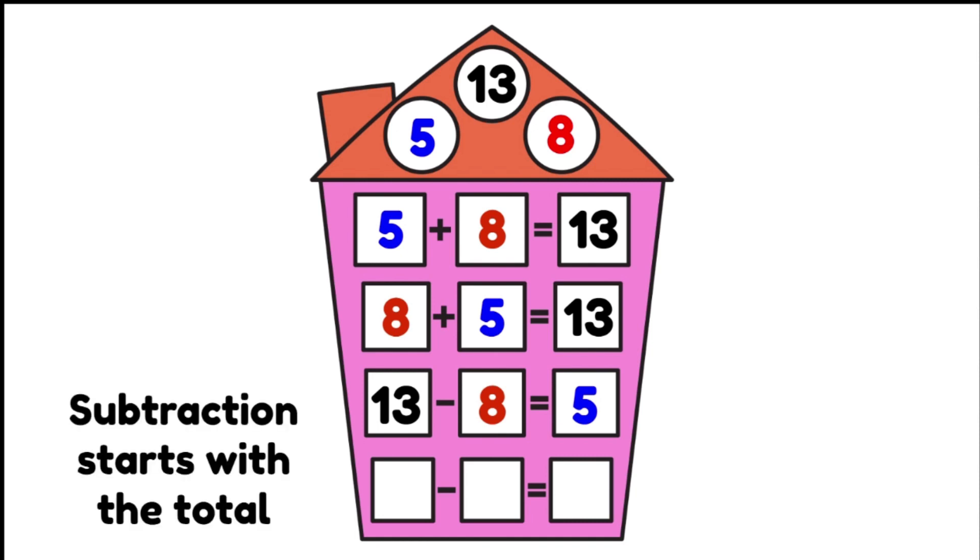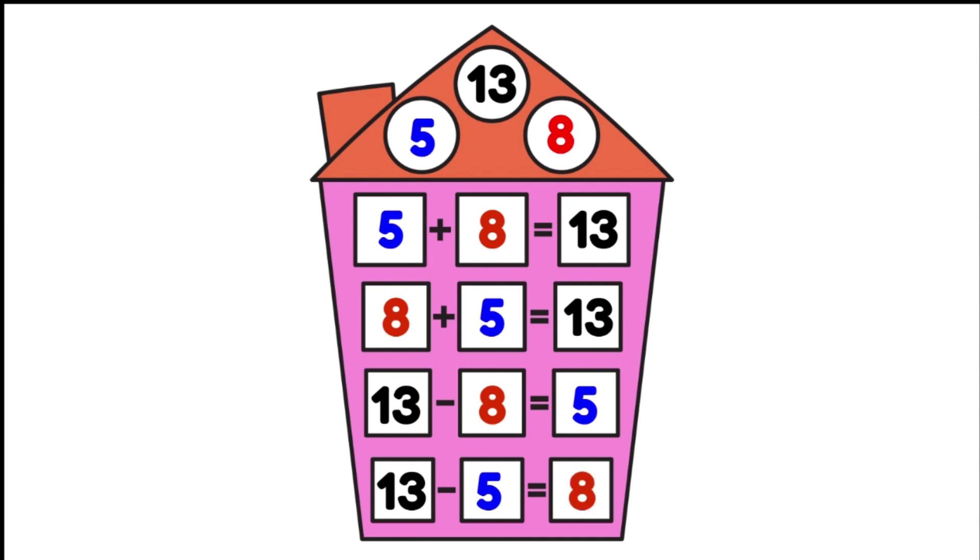Again, we make a new subtraction number sentence starting with 13 because that's our total. 13 take away 5 gives us 8. We've now created 4 number sentences using 3 numbers, reminding us that addition and subtraction have an inverse relationship.